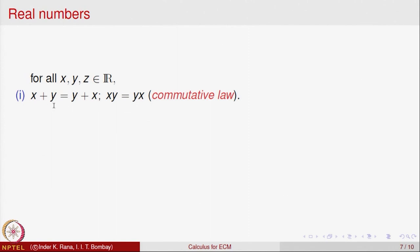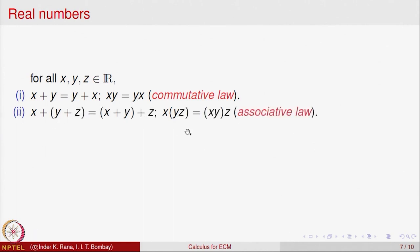The next is the associative law. Given three elements x, y and z in R, you can take their sum in any order. First take the sum of y and z and then add x, or first take the sum of x and y and then add z — you will get the same number. Similarly, if you take the product of y and z first and then take its product with x, that is the same as taking the product of x and y first and then taking its product with z. These are the associative properties of addition and multiplication.